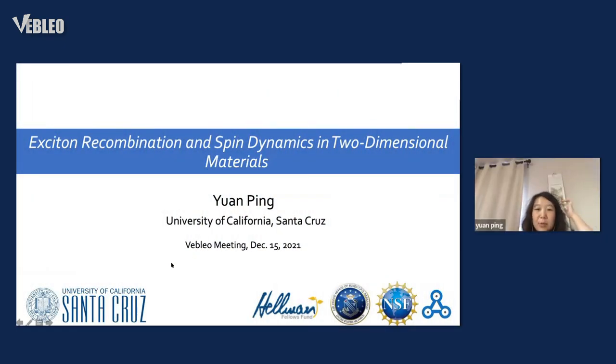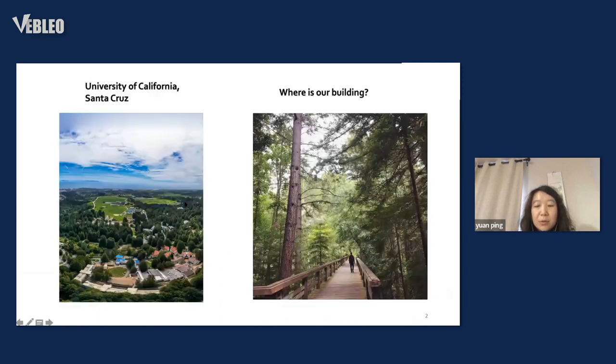Thank you for the invitation. This is Yuan Ping from University of California, Santa Cruz. I'm going to introduce my recent work after I arrived at UCSC. UC Santa Cruz is in Silicon Valley, close to the Bay Area. The campus is embedded in the forest close to the ocean. It's very beautiful, like a national park. Welcome to visit and apply to our program.